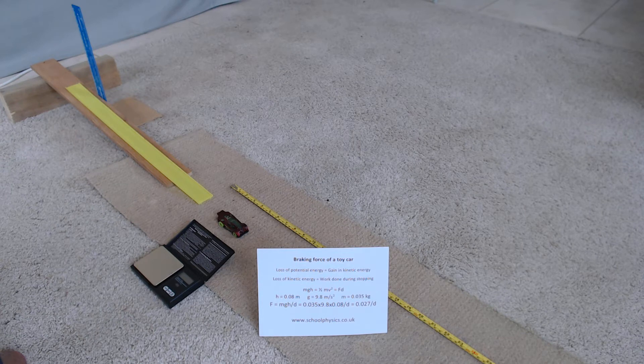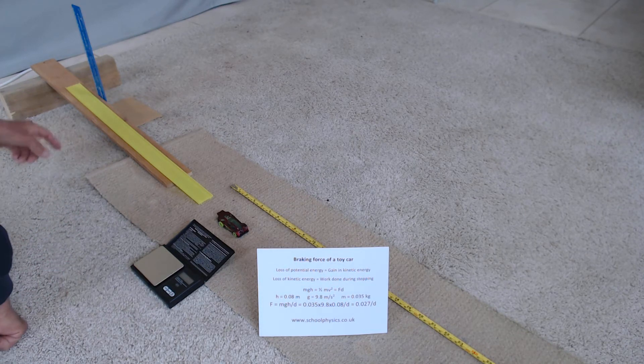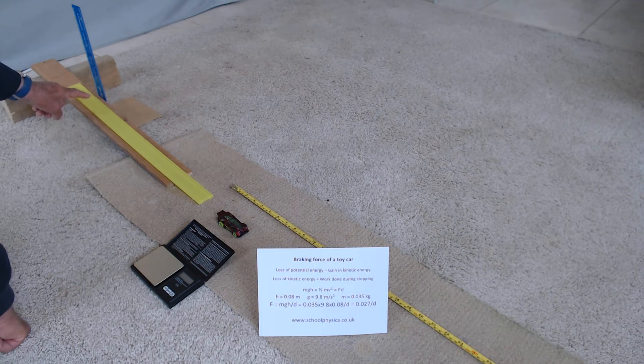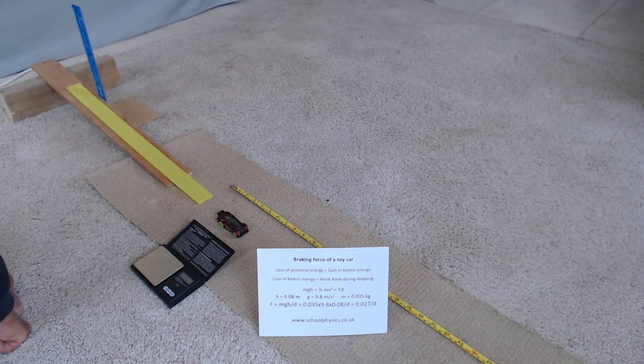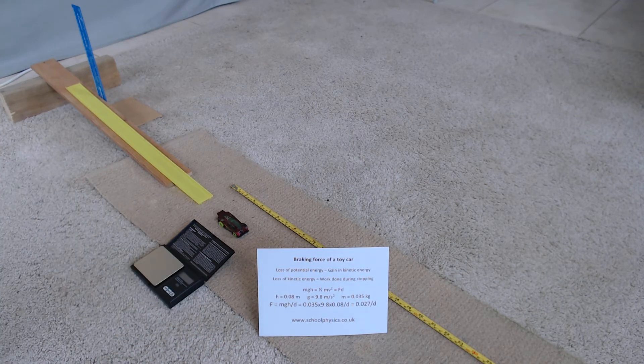But we don't know v and we've no way of calculating it here. However, we are going to assume that the loss of potential energy from here to here is equal to the gain in kinetic energy. So we need to measure, therefore, mgh, which is the loss of potential energy.